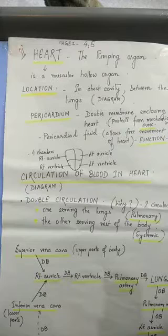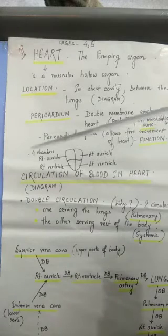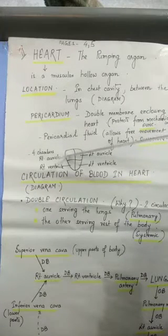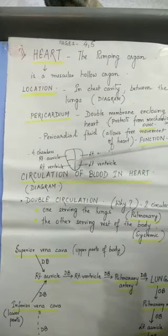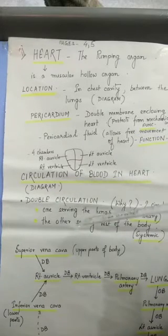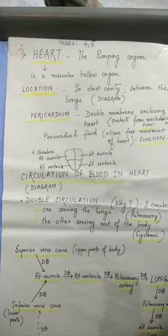Now coming to the structure of heart. Heart has got four chambers: right auricle, right ventricle, left auricle, and left ventricle. So now let us come to the circulation of blood in the heart.